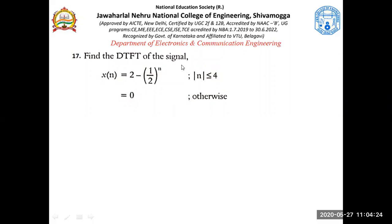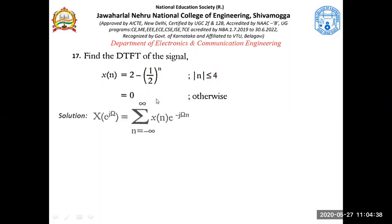They have not asked us to find the DTFT using a property, so we shall proceed with the standard equation for X(e^jω). This signal is given in the time domain and we are finding its DTFT — that is, we are finding the frequency domain representation.